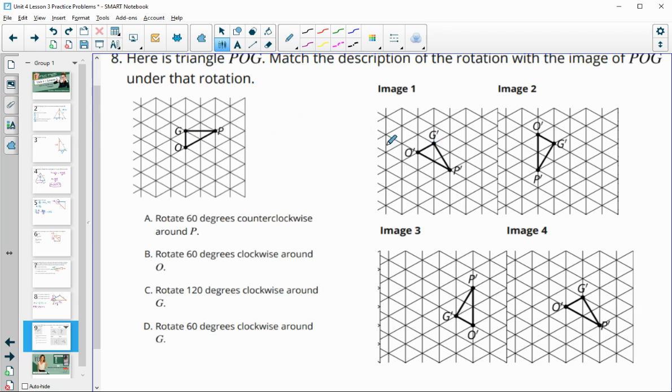So image 1, this point G is staying in the same spot. And also in image 2, G stayed in the same spot. Image 3, it has P in this same spot. So P' and P are in the same spot.